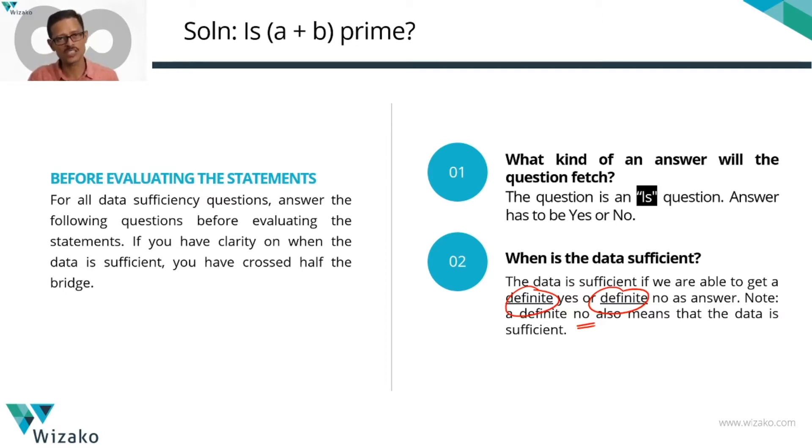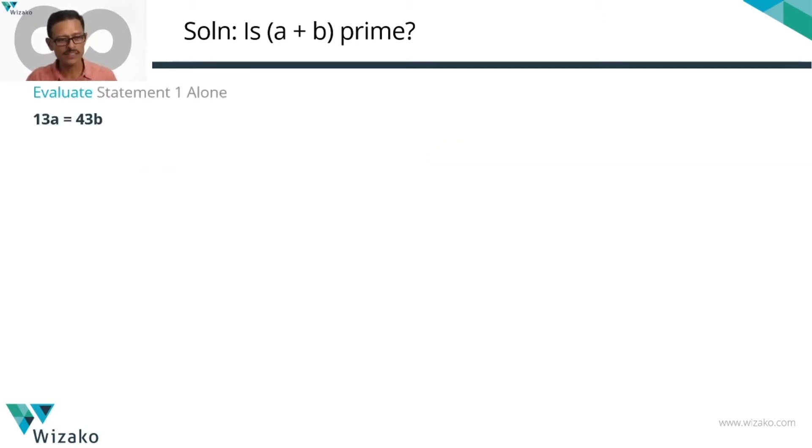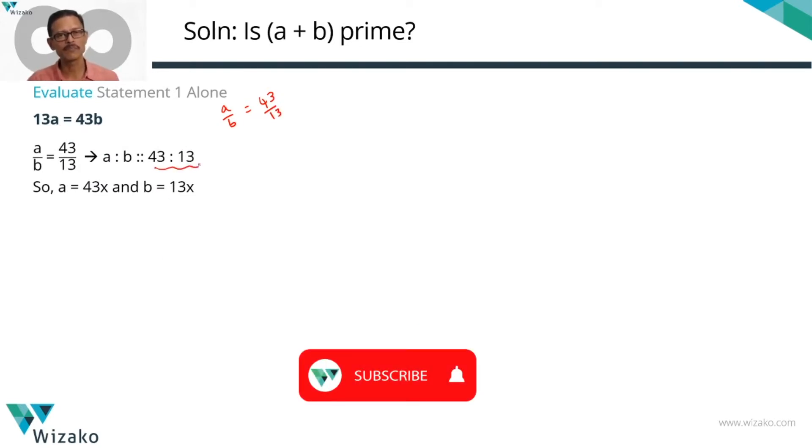Start with statement one: 13a = 43b. I'm going to write this as a/b = 43/13. That translates to a:b = 43:13. If the ratio a:b is 43:13, then we can say a = 43x and b = 13x. We need to verify whether a + b is prime. If a = 43x and b = 13x, then a + b = 56x.